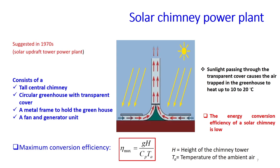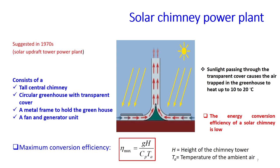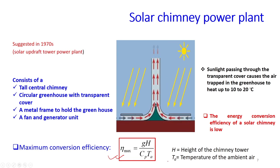Because of this temperature and density difference, there will be convective currents moving upward. While moving upward, a fan at the base of the chimney starts rotating, and since it is coupled with a generator, it starts generating electricity. The energy conversion efficiency of this technology is very low, and the maximum conversion efficiency can be calculated using the expression: eta_max = g × H / (Cp × Ta), where g is acceleration due to gravity, H is the height of the chimney, Cp is the specific heat of air, and Ta is the ambient temperature.